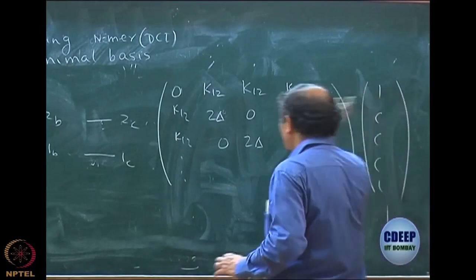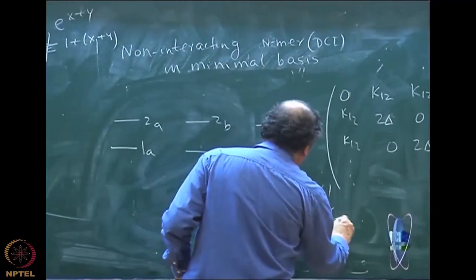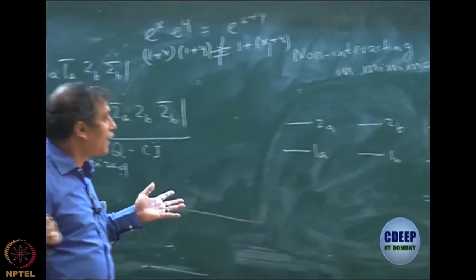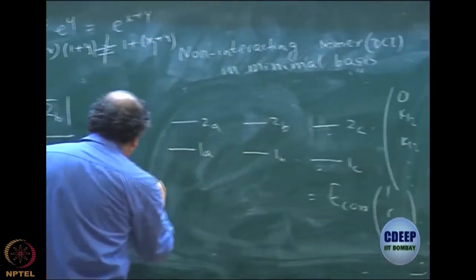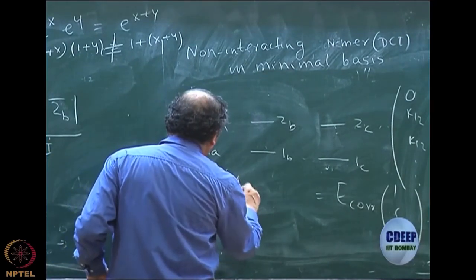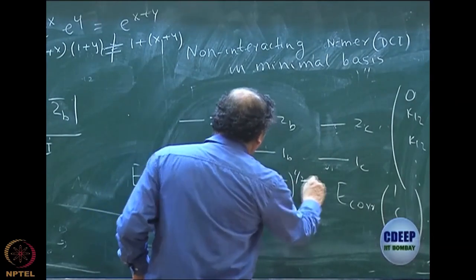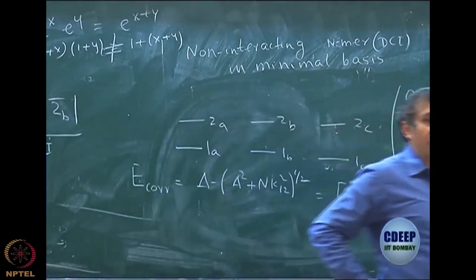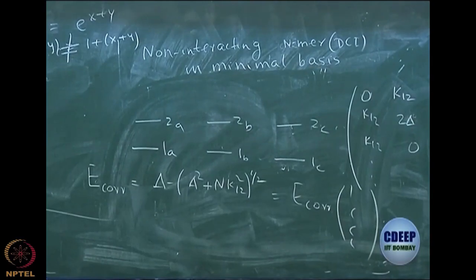By symmetry, I can keep writing C, C, C, etc. — exactly identical to the dimer case, giving E_correlation with 1, C, C, C. Just expand this from dimer to n-mer and I can solve this problem in the same manner. The result you will get is: E_correlation = δ − √(δ² + n·K₁₂²). As you would expect, where you got 2 before, you now get n. If you set up the quadratic equation and solve it, you get this.